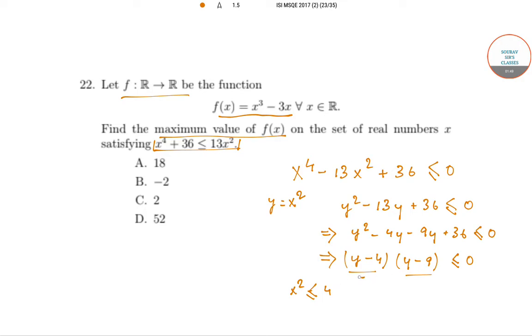And suppose y minus 9 is positive, it means x squared is greater than equal to 9. Now we can simply see that this can never happen. x squared cannot be less than equal to 4 as well as greater than equal to 9 at the same time. So it has to be the other thing: this has to be positive and this has to be negative. So what we have is x squared is greater than equal to 4 and x squared is less than equal to 9.